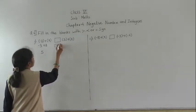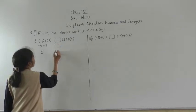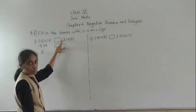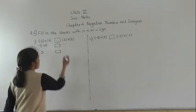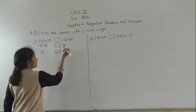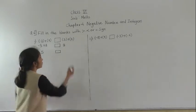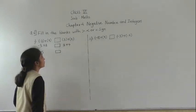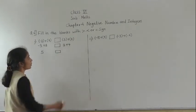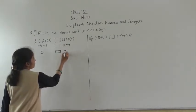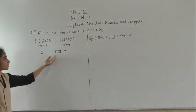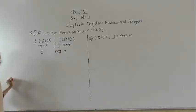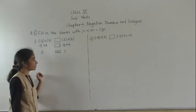Now let's solve this side. There is no sign here, which means plus, so plus plus plus gives plus 3. Plus plus gives plus 4. Now 3 plus 4 equals 7. Comparing both sides: 7 is the greater number.